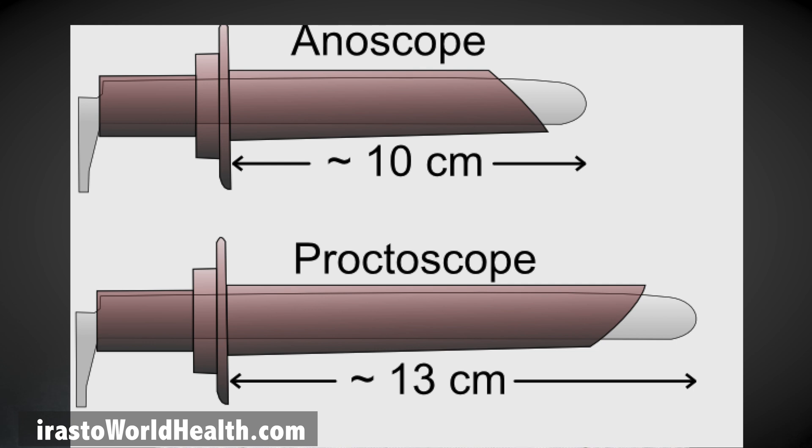In sigmoidoscopy, your doctor uses a proctoscope to view the lining of the rectum and the lower colon. These tests are often done to investigate symptoms such as lower abdominal pain, blood loss from the stools, bleeding from the rectum, chronic diarrhea, and constipation.